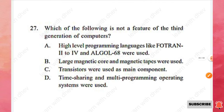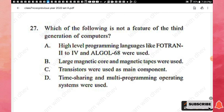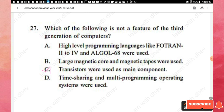Question 27: Which of the following is not a feature of the third generation of computers? Options include: high-level programming languages like FORTRAN and ALGOL 68 were used; large magnetic core and magnetic tapes were used; transistors were used as the main component; and time sharing and multiprogramming operating systems were used. Transistors were used in the second generation, not the third. Option C is the wrong one — the right answer.